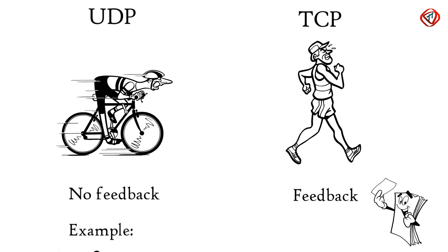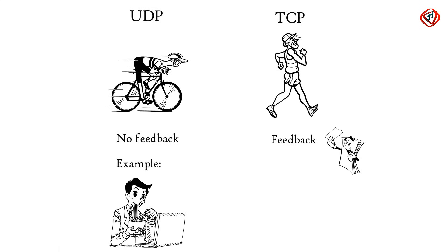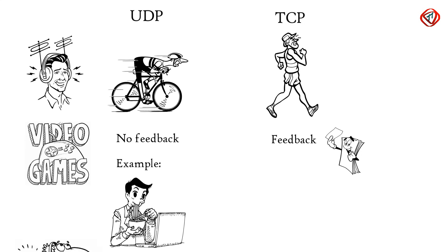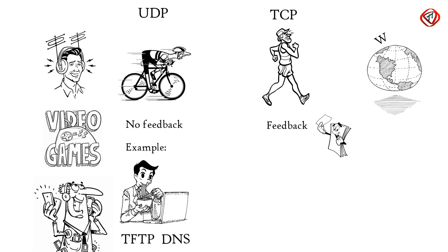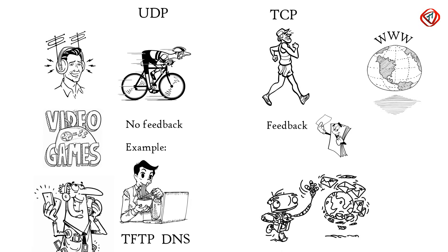UDP is used where it does not matter whether we have received all the data — for example, online streaming of movies, songs, games, Voice over IP, TFTP, DNS, etc. On the other hand, TCP is used where full data delivery is a must — for example, the World Wide Web, email, FTP, etc.